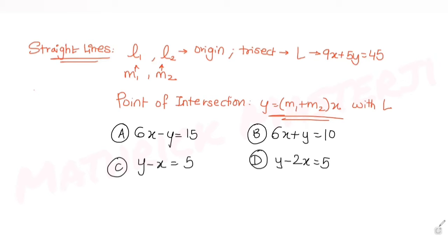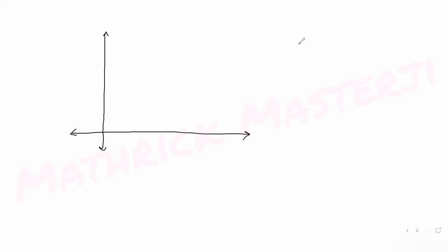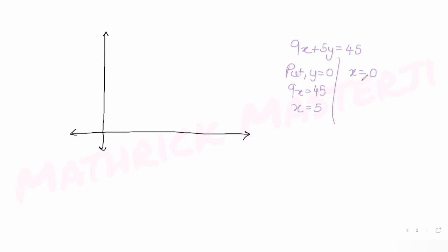The question says L1 and L2 pass through the origin and trisect line segment L. Let's first find where line L intersects the axes. Given 9x + 5y = 45: putting y = 0 gives x = 5, and putting x = 0 gives y = 9. So the two coordinates are (5, 0) on the x-axis and (0, 9) on the y-axis.